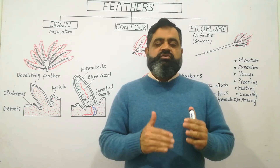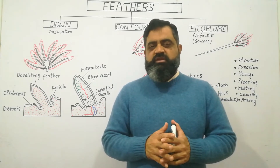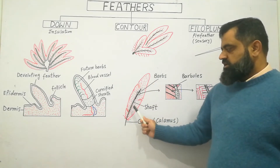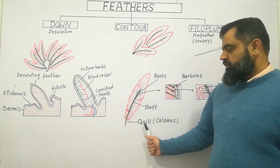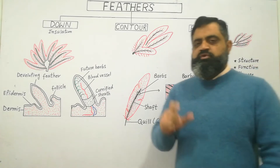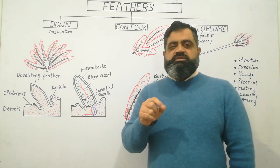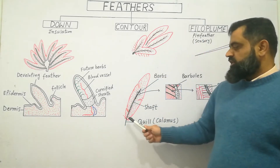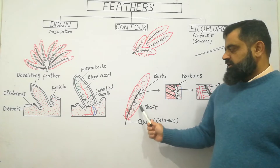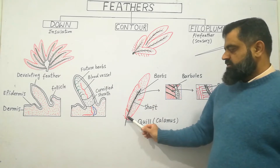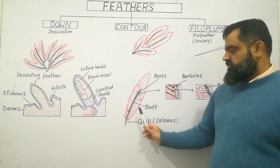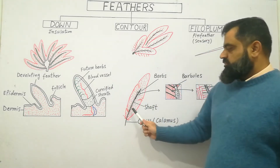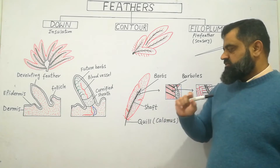After the feather becomes mature, it has a vein shape. At the base there is a quill known as the calamus; with the help of this quill and calamus, feathers are embedded in the follicles of the dermis. If you look at the vein, there is a central structure known as the shaft — this is the main portion that supports the feather.